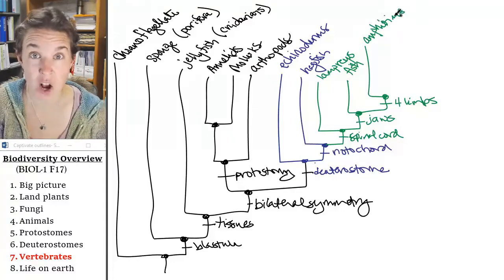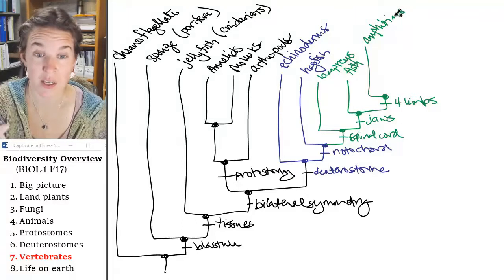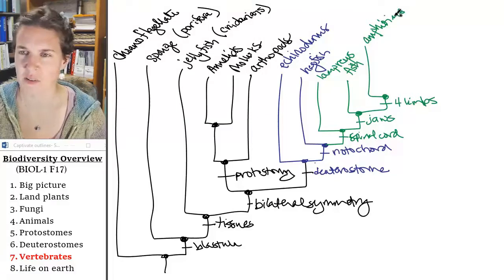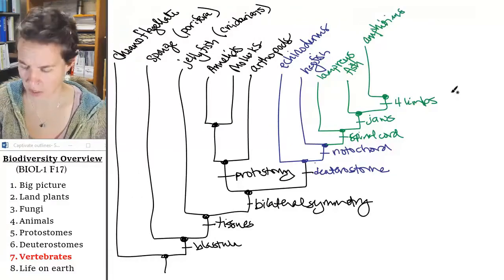Amphibians are frogs, salamanders, frogs and salamanders. I feel like there's some more of those things. Why am I not thinking of them?